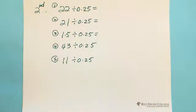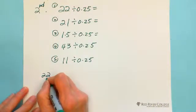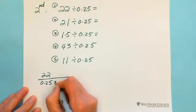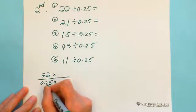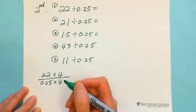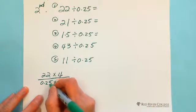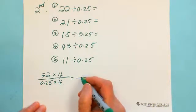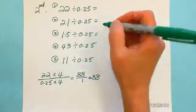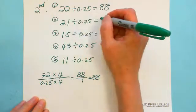Similarly, if you have 22 divided by 0.25 — think of it like 25 cents, a quarter. Multiply by 4 to make one dollar. So dividing by 0.25 is actually multiplying by 4, because 0.25 multiplied by 4 equals 1. So 22 divided by 0.25 is 88.